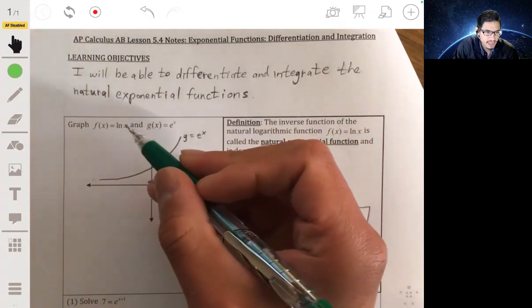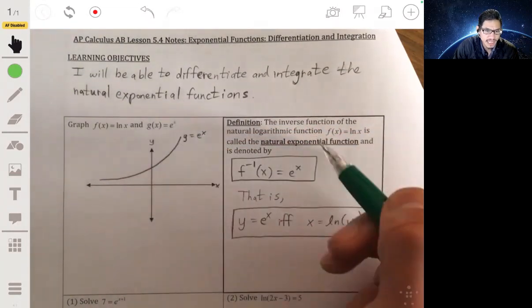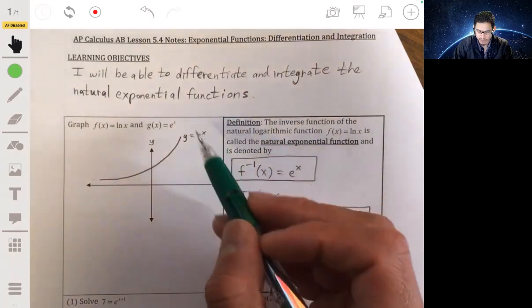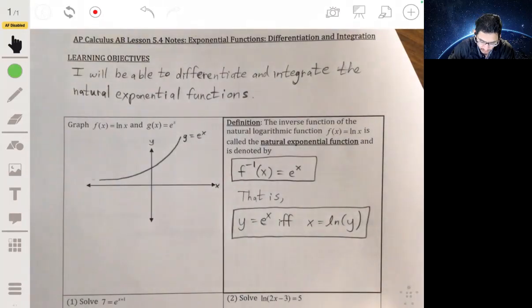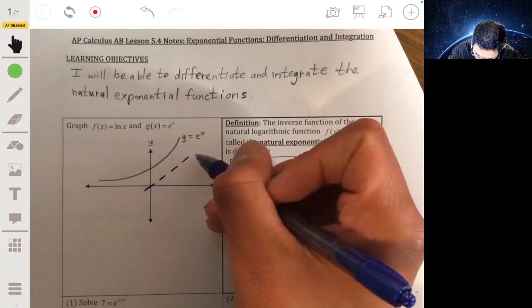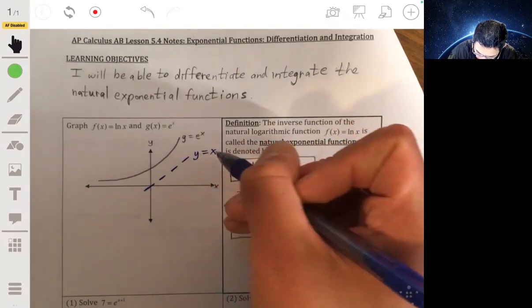Now, if f of x equals the natural log of x, and we're saying that the natural log of x is the inverse of e to the x, then remember, geometrically, it's going to be a reflection across the line y equals x, across the diagonal.